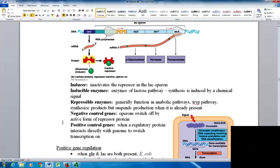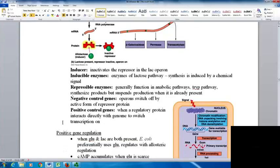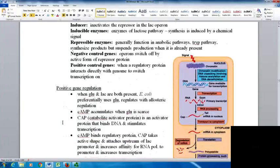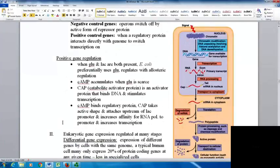Negative control genes are operons that switch off by active forms of the repressor protein. Positive control genes have a regulatory protein interact directly with the genome to switch transcription. When glucose and lactose are both present, E. coli preferentially uses glucose, regulating this with allosteric regulation.